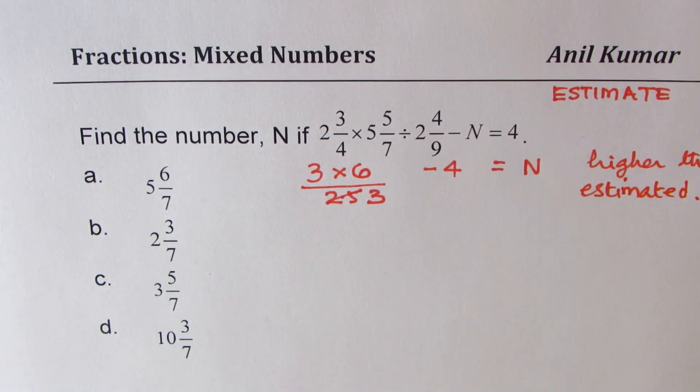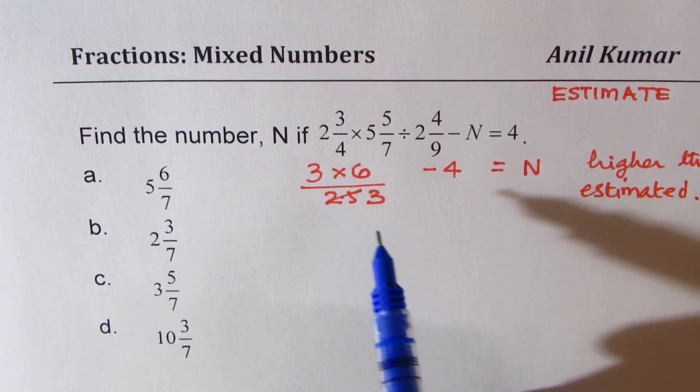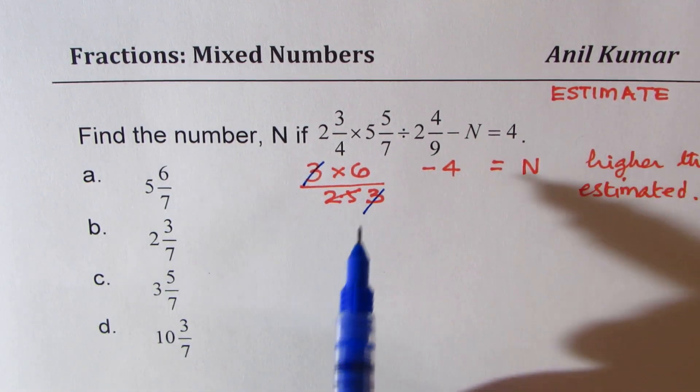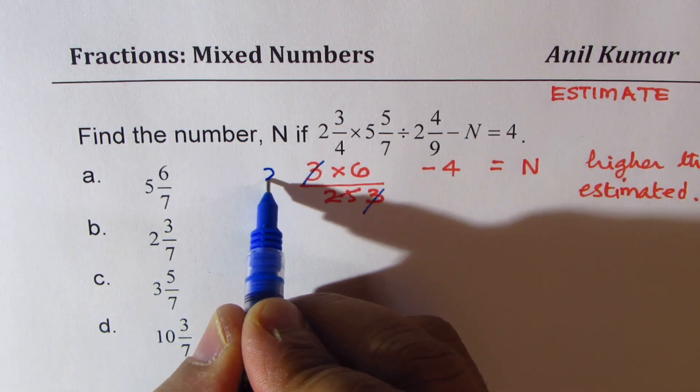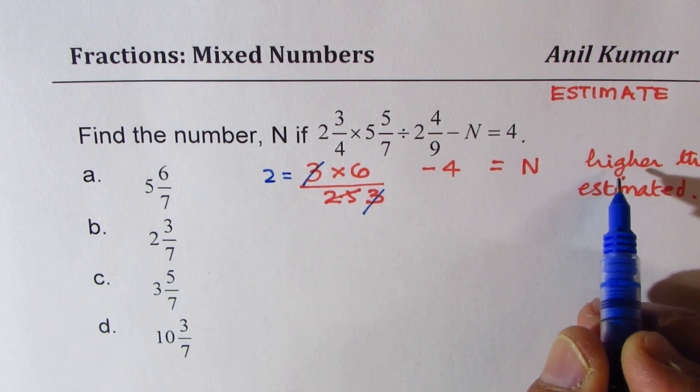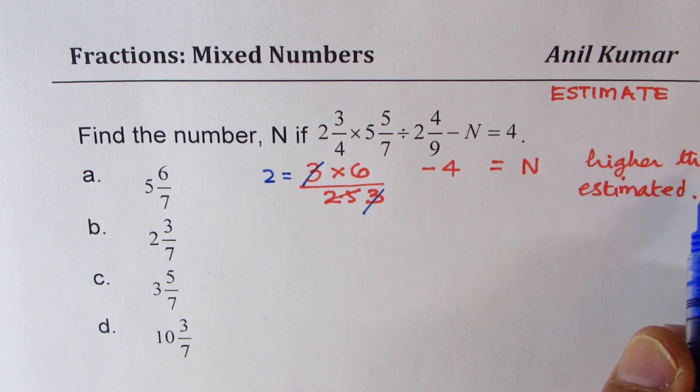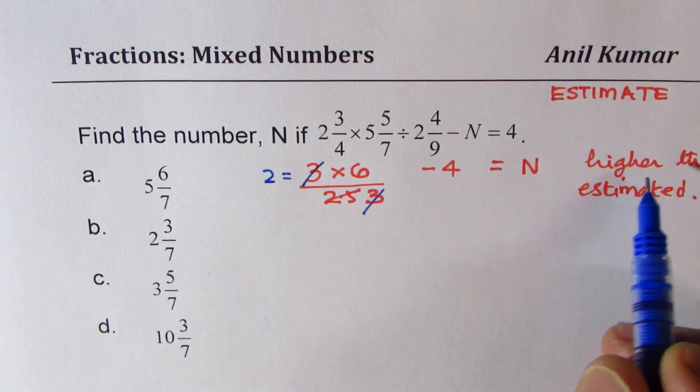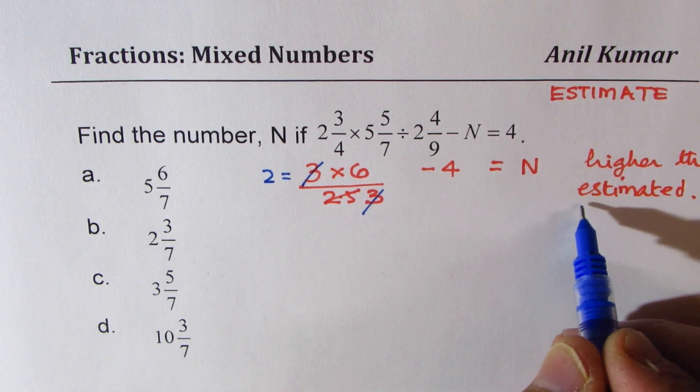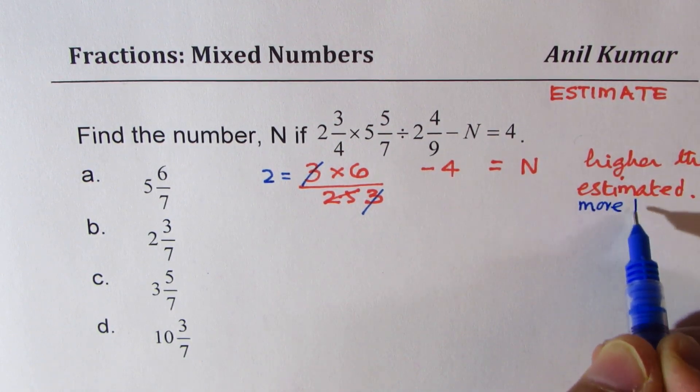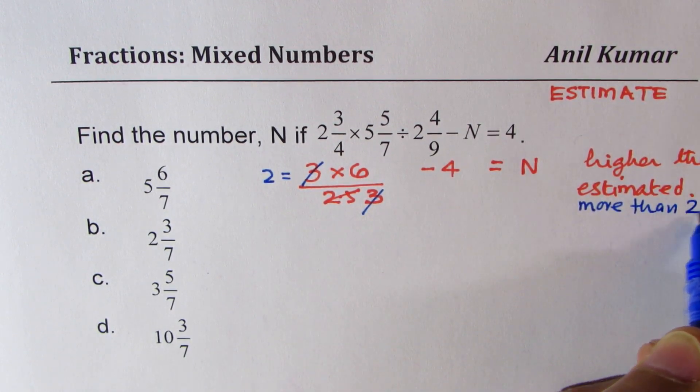You understand this step. This is the most critical step, and that will help you to get the right answer. So, we estimate like this. This 3 cancels. And 6 minus 4 is 2. So, what we get is 2. So, we know our estimate is higher than this is what we are estimating. We need something which is more than 2.